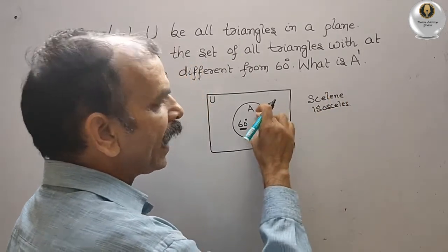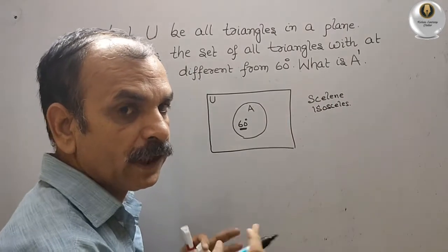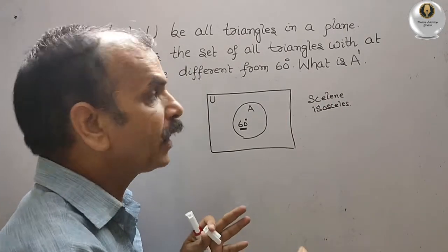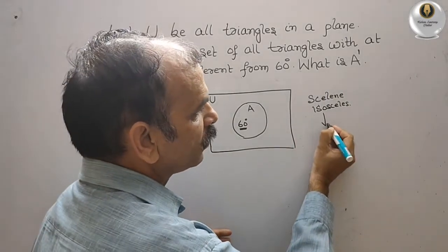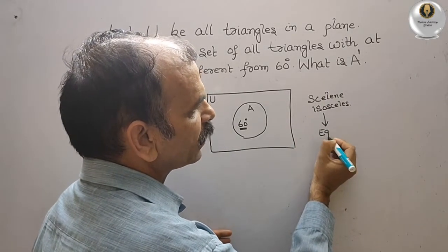So they are in set A. They have asked you what is A dash, so remaining is what? It's your equilateral triangle.